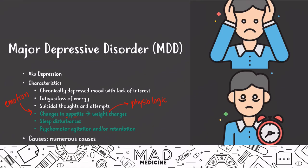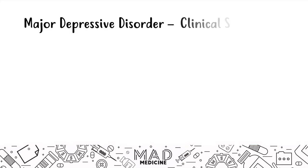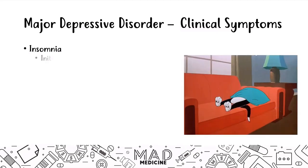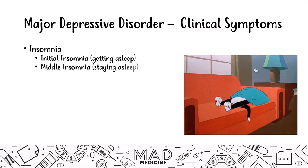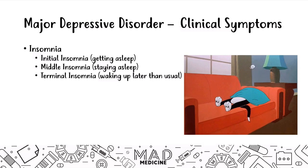When it comes to MDD, there are so many causes that it doesn't make sense to memorize them all — just understand it can be precipitated by a multitude of things. For the USMLE Step 1, you need to understand the clinical symptoms. Patients end up getting some sort of insomnia. Either they'll have initial insomnia, where they have trouble falling asleep; middle insomnia, where they have trouble staying asleep; or terminal insomnia, where they wake up earlier than usual. Patients can also have hypersomnia — not trouble with sleep, but excessive sleeping.